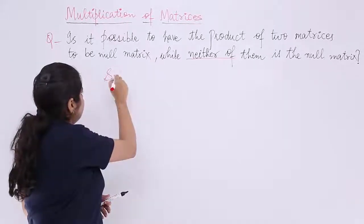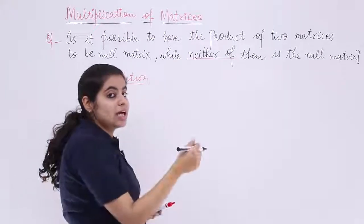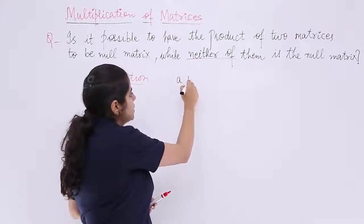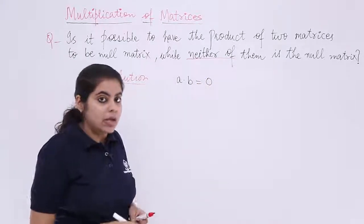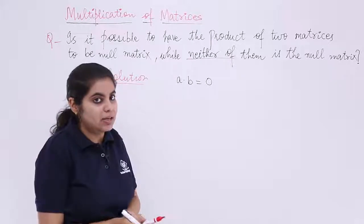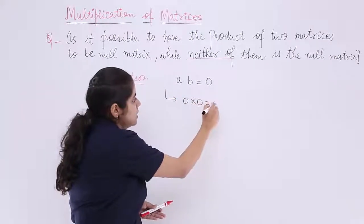In this question when I write the heading solution and I take an example of simple numbers: if I have two numbers A and B and I know that their product is 0, then what conditions arise in my mind? The conditions that arise in my mind are one case is that both of them are 0s, that means 0×0 is 0.